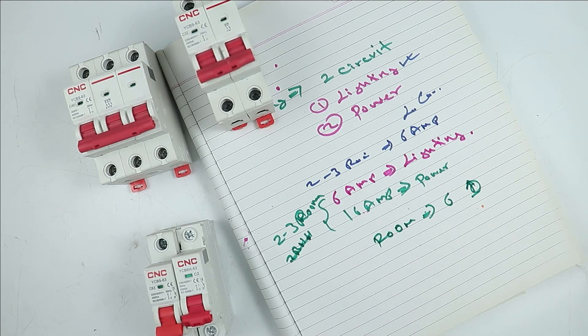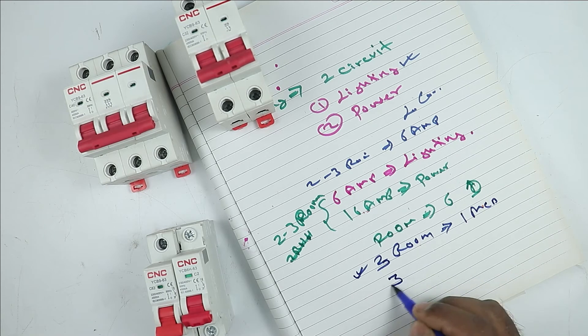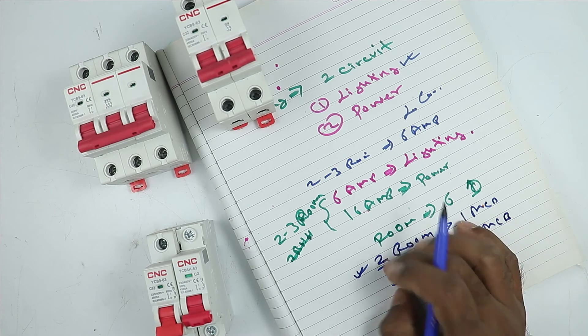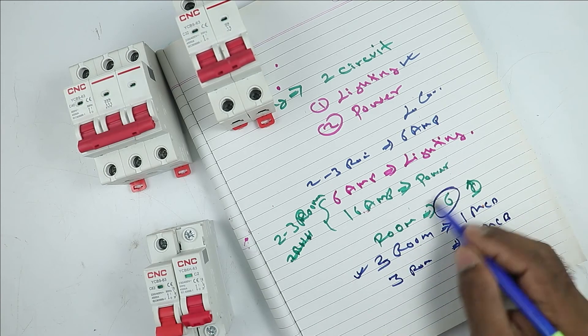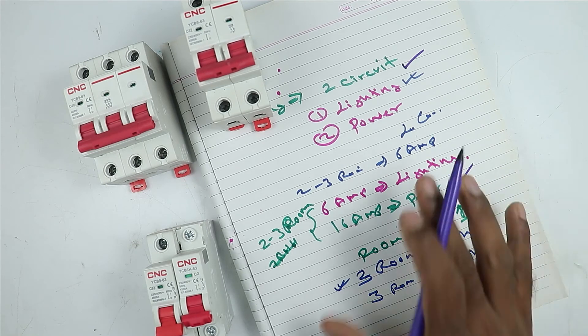Suppose there are 6 rooms in your home, then what you can do, for 3 rooms install 1 MCB and for another 3 rooms install 1 MCB. This means you have to use total 2 MCB for 6 rooms. So you have to take care of these 2 things whenever you go for wiring of home.